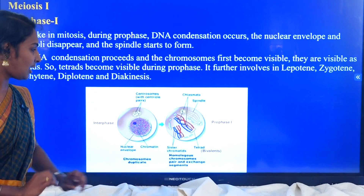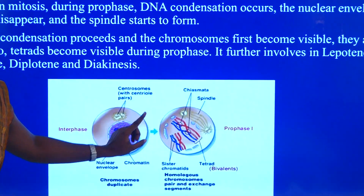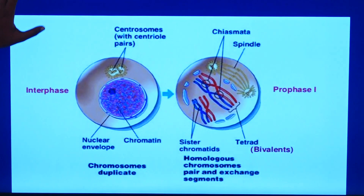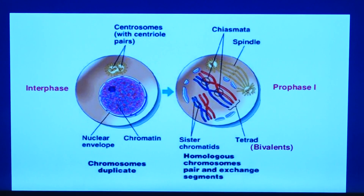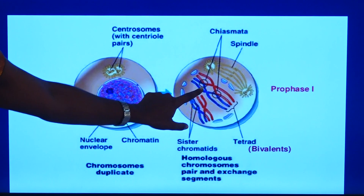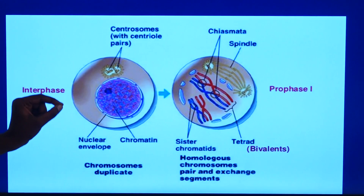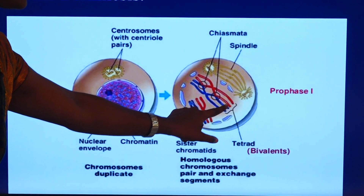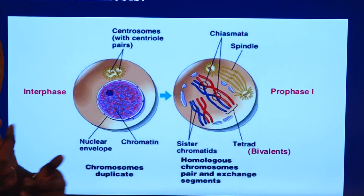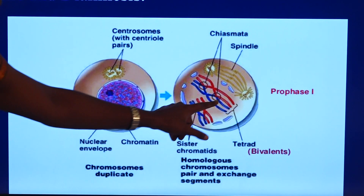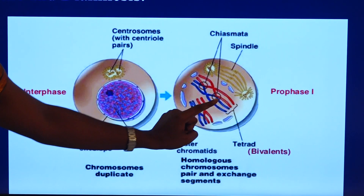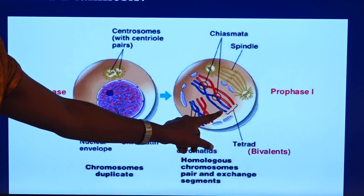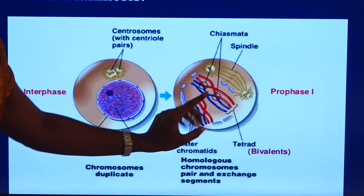Mainly there will be crossing over. Crossing over of genetic material will take place mainly in prophase I. Non-sister homologous chromosomes undergo crossing over in prophase I. This just looks like four fingers, so we call it tetrads.